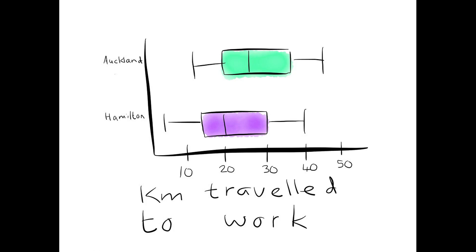When interpreting a box and whisker plot, there are a number of aspects I can look at. For example, I can compare the minimum values. So I can say that people in Auckland travel further to work than people in Hamilton. And I can say this because in Hamilton, the minimum distance travelled might be about 5km, whereas in Auckland, the minimum distance might be closer to 15km.